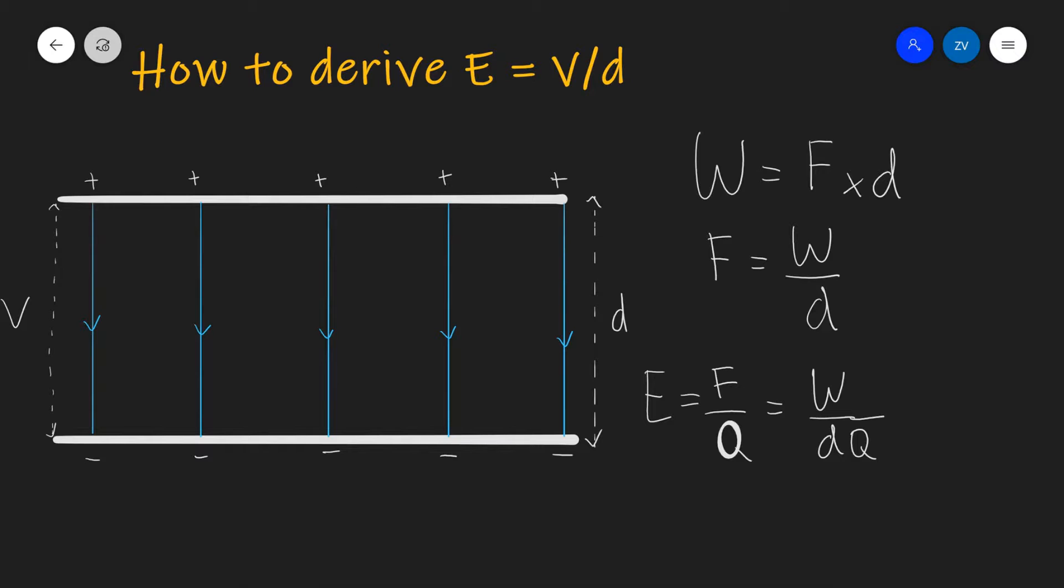But if you remember, potential difference V is equal to the amount of energy that's been transferred per unit charge. So V is W over Q. So this expression over here, this is actually our potential difference. Therefore, it follows that E is going to equal V over D.